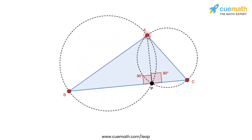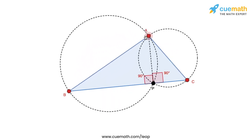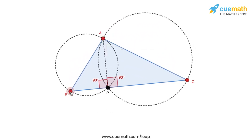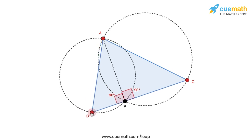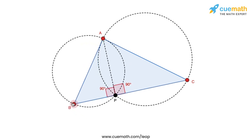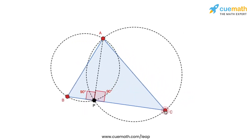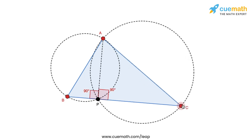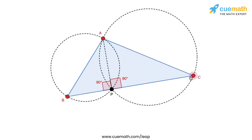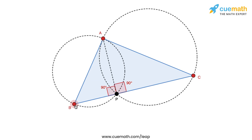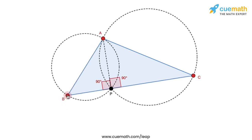Even as I vary the triangle, you can see that both AB and AC always subtend an angle of 90 degrees at P. So the total angle at P, which is angle BPC, is always 180 degrees — hence P lies on BC.